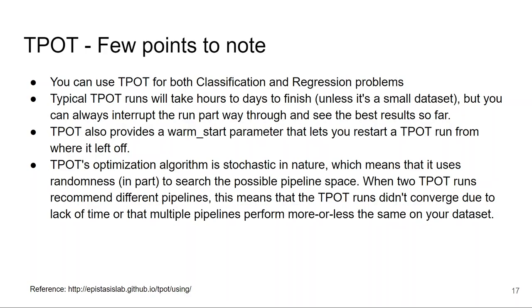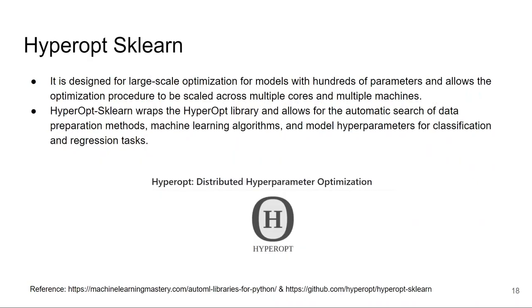Let's discuss the third AutoML library, Hyperopt-sklearn. Hyperopt-sklearn wraps the Hyperopt library and allows for the automatic search of data preparation methods, machine learning algorithms, and model hyperparameters for both classification and regression tasks. You may be wondering what is Hyperopt library. Hyperopt library is used for distributed hyperparameter optimization and makes it easy for us.